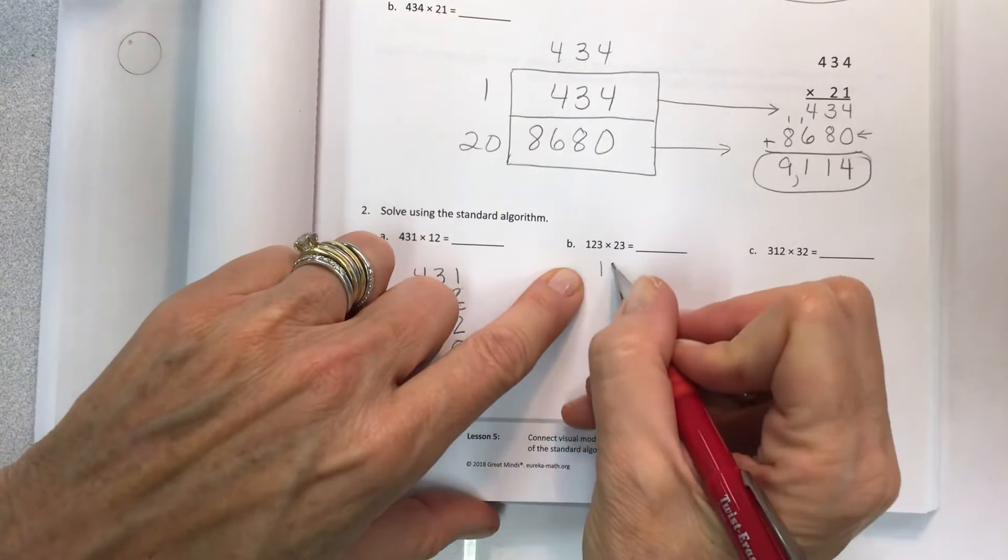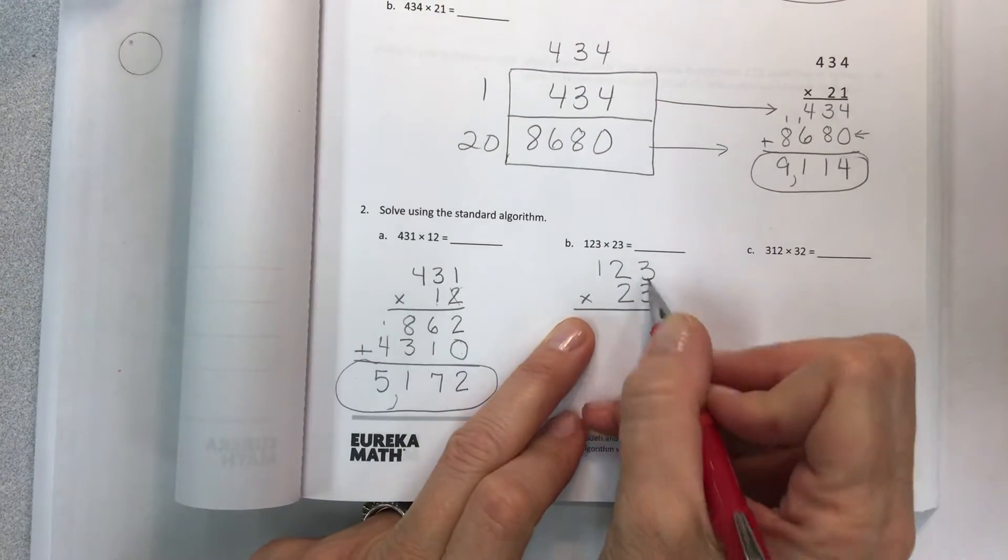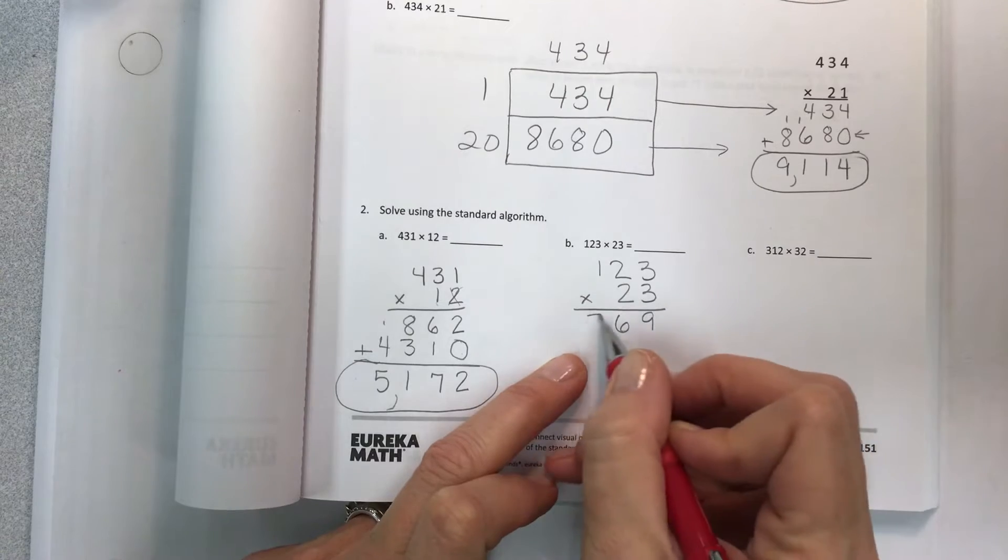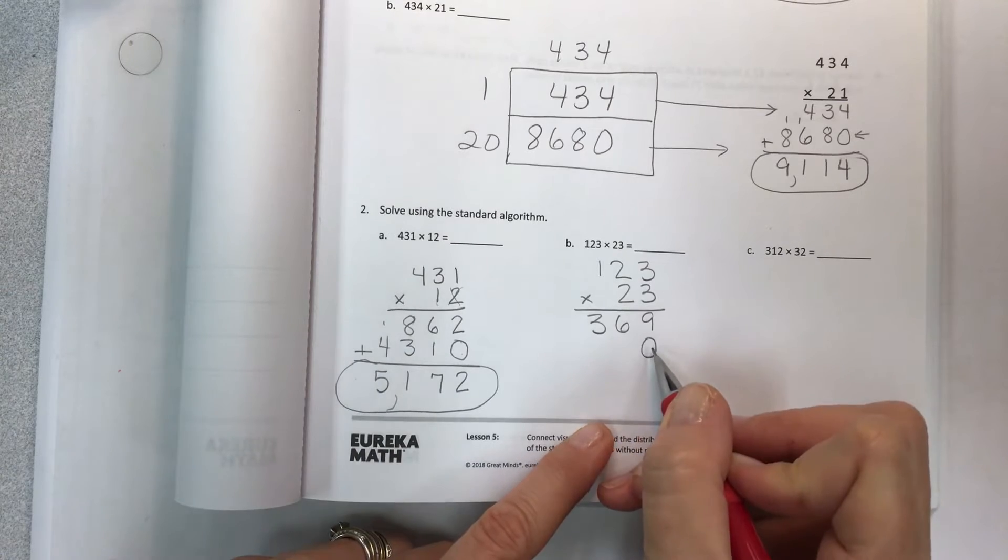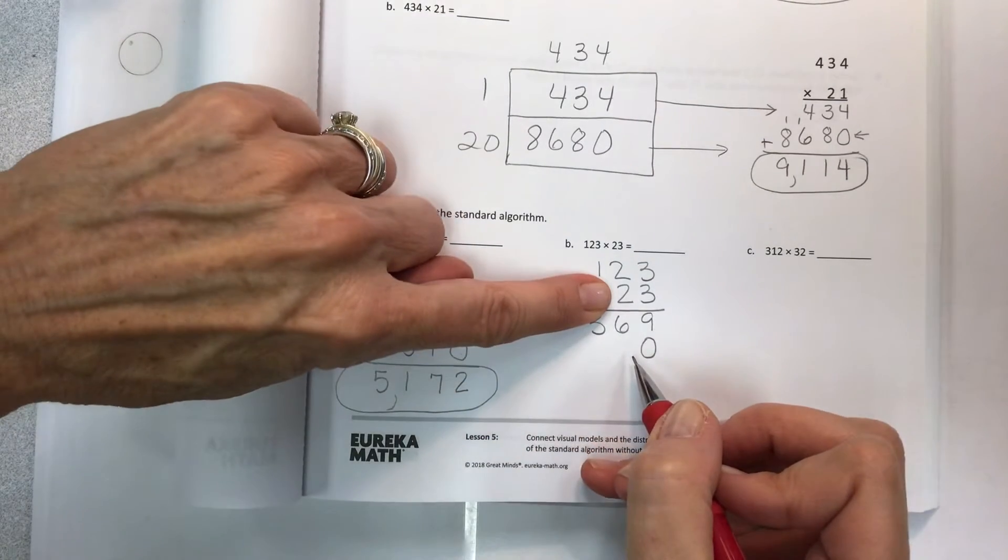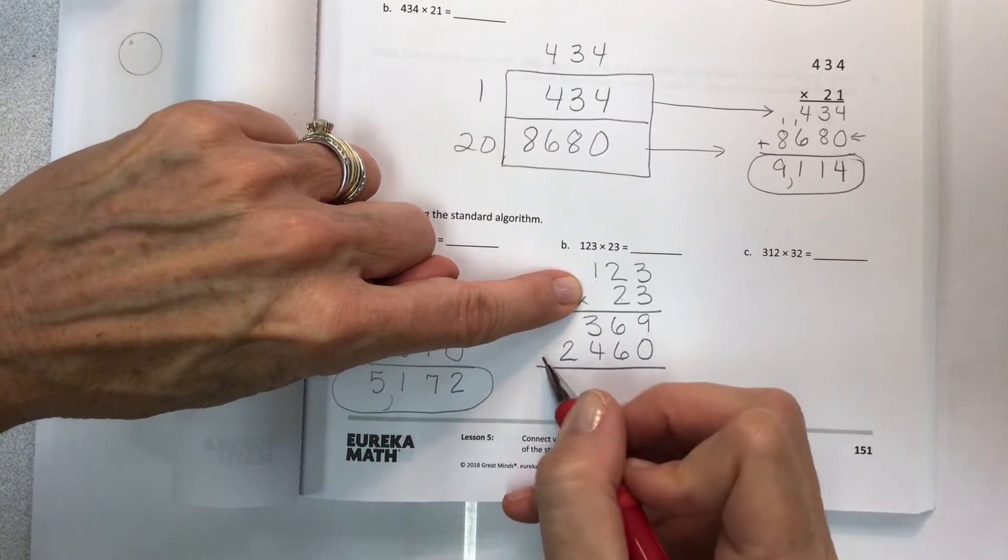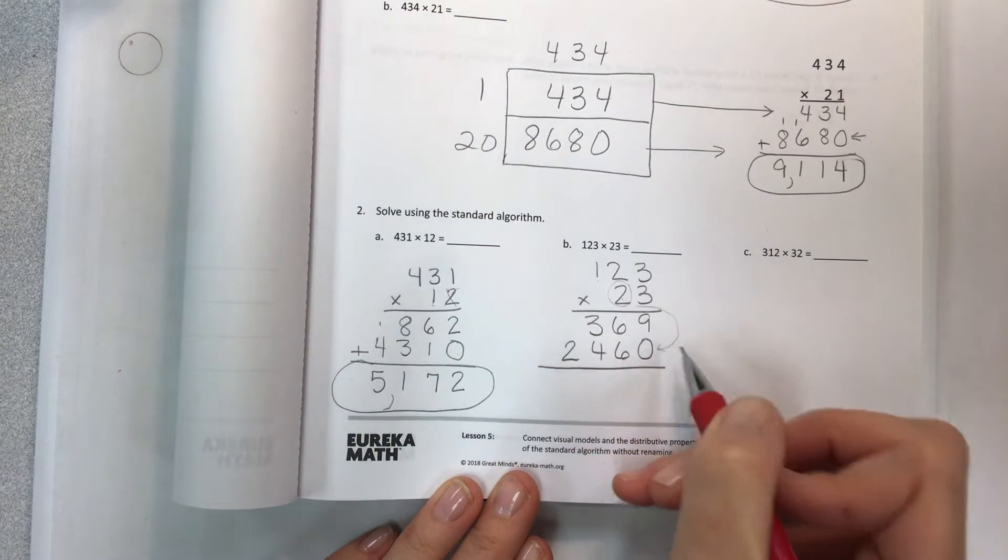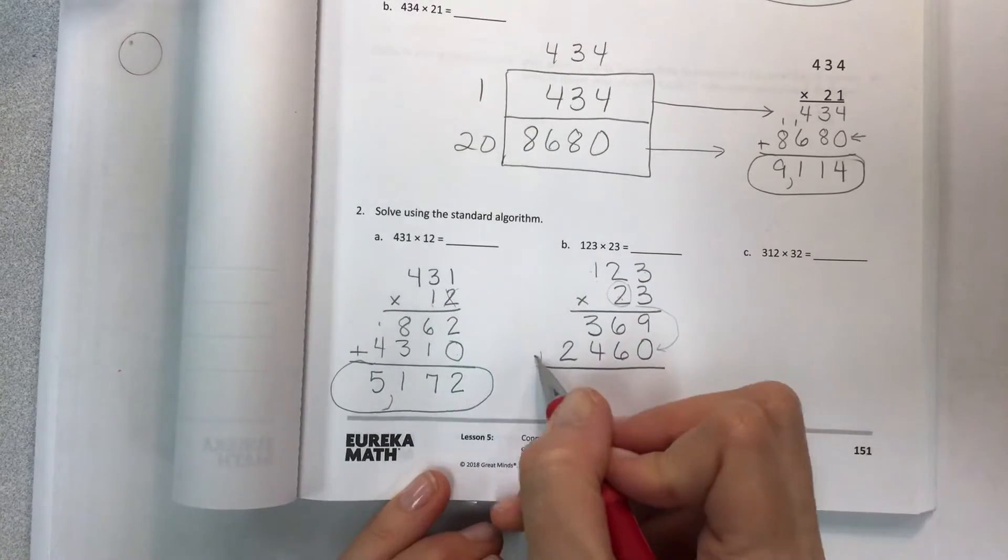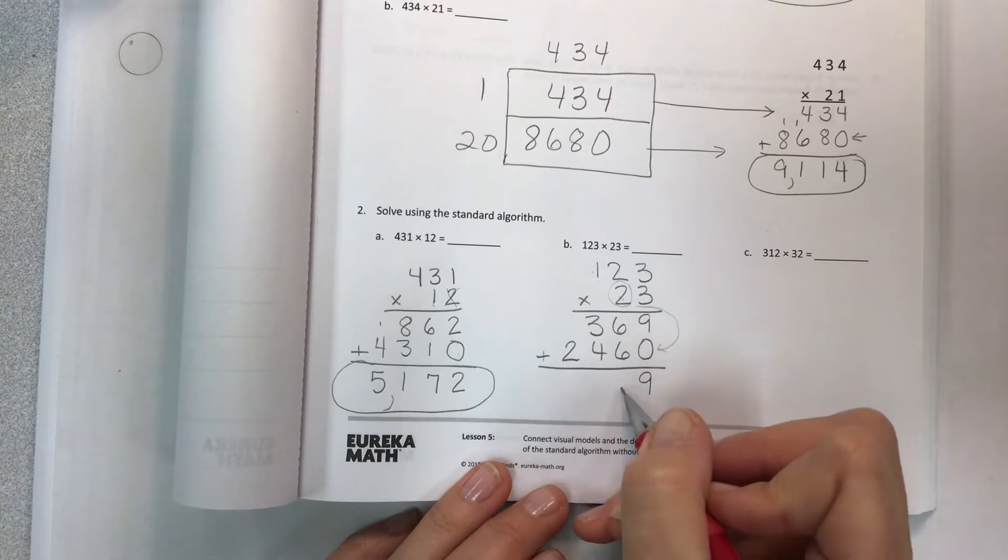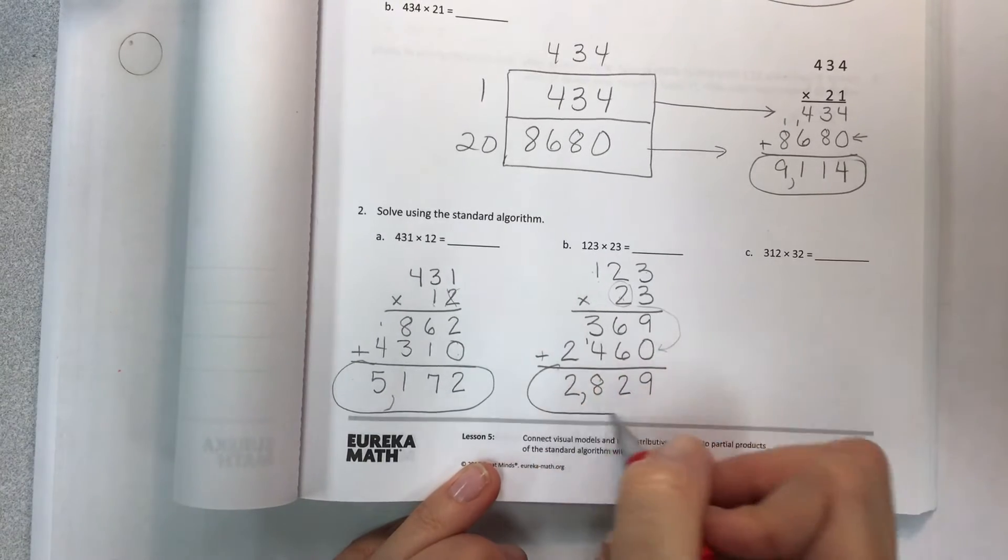Let's do another one. 123 times 23. 3 in the ones place. 3 times 3 is 9, 3 times 2 is 6, 3 times 1 is 3. Now this is really 20, it's two 10s. Hold this spot with a 0 so you can bump over to the 10s place. Then go 2 times 3 is 6, 2 times 2 is 4, 2 times 1 is 2. 9 plus 0 is 9, and then we have 12, and then 7 plus 1 is 8, and then the 2 comes down. 2,829.